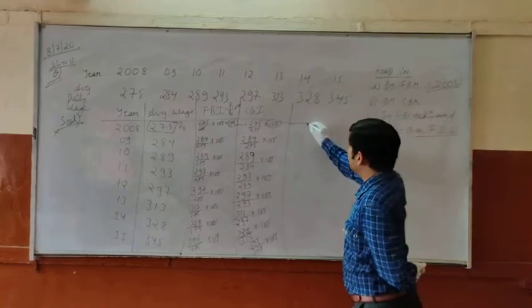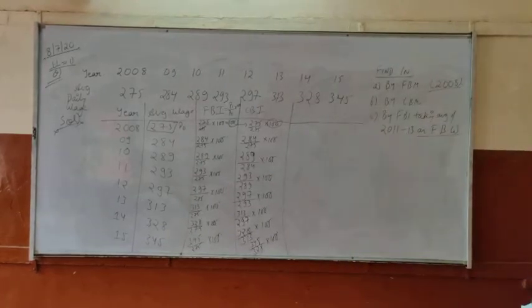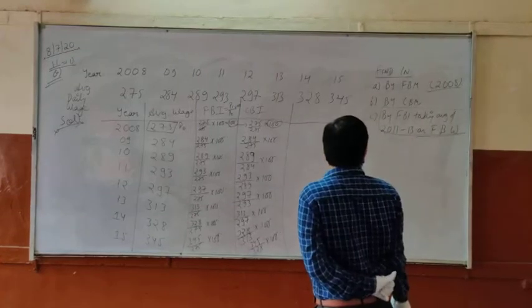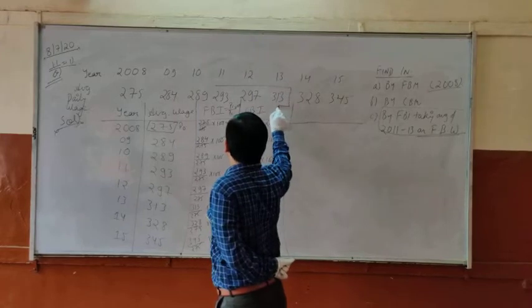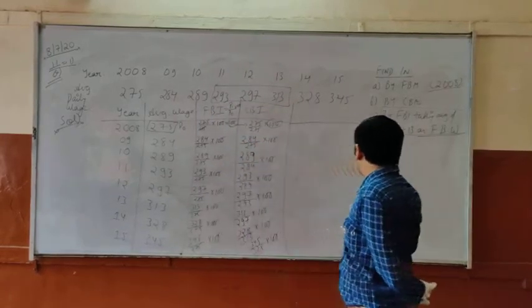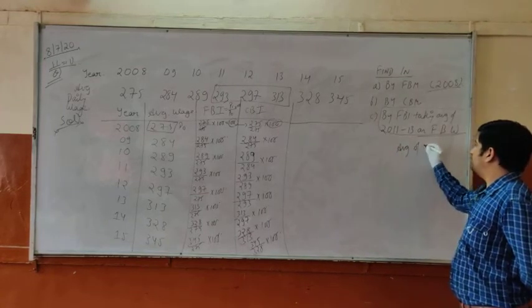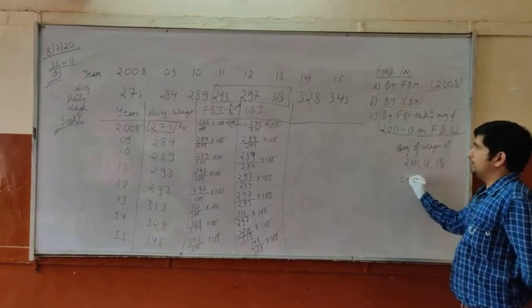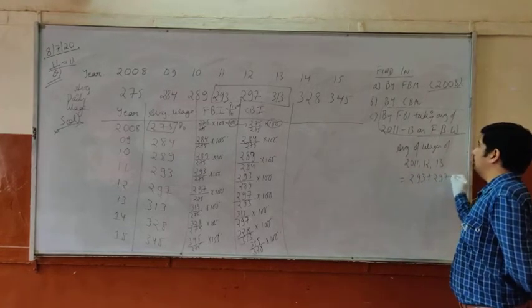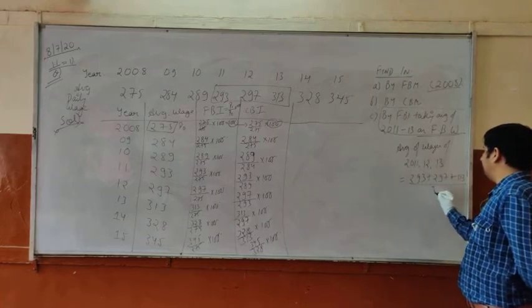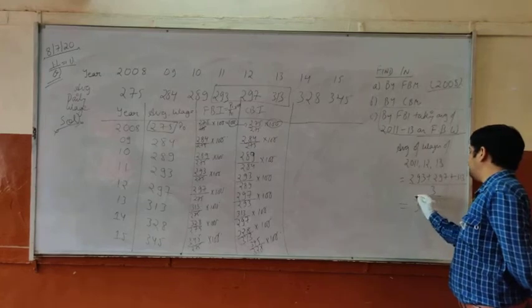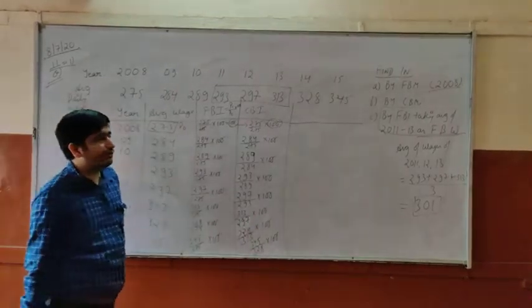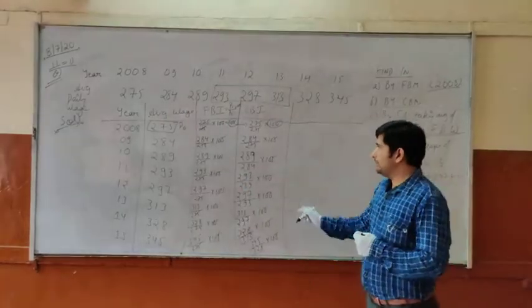Now the third part. This question has come in your board exam also. Now what should we take in this case? Average of 2011, 12 and 13. How to find average? You can find average of wages of 2011, 12 and 13: 293 plus 297 plus 313 divide by 3. You will get 301. Every price we have to compare with 301.